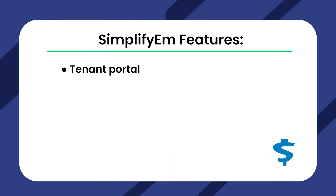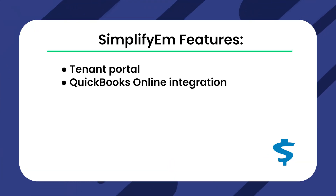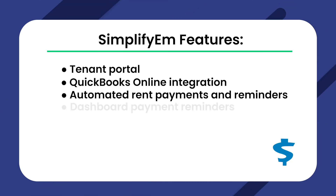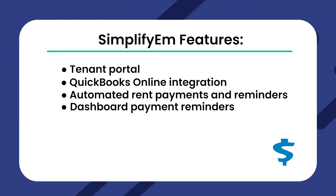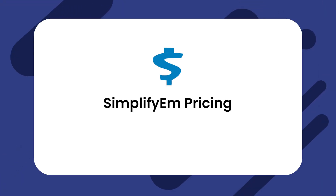Simplifium is a property management software geared more towards the accounting side of things. So if you're just looking for a program to help manage your property accounting and other typical rental property management features aren't priorities for you, this might be a good choice. Simplifium features include a tenant portal, QuickBooks online integration, automated rent payments and reminders, dashboard payment reminders, and lease agreement processing. Simplifium has multiple pricing tiers based on the number of units you have, starting at $35 per month to manage up to 10 units.